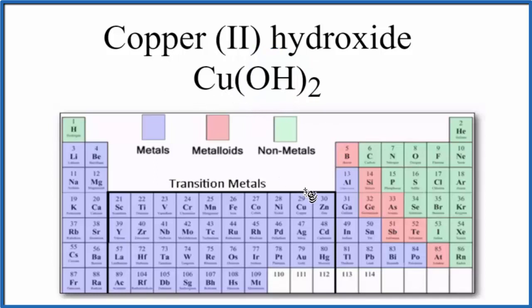So when we look at the periodic table, copper is right here, that's a metal. Oxygen is a non-metal, and then hydrogen, that's a non-metal as well. So we have a metal and then non-metals. We have a metal bonded to these non-metals, that's going to be an ionic compound.